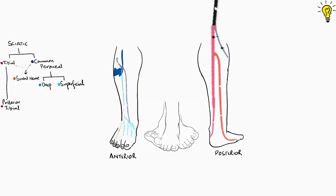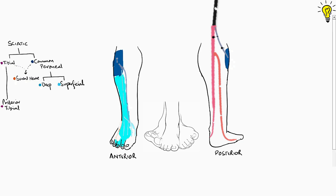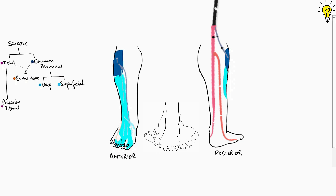The common peroneal supplies the lateral proximal aspect of the leg before it bifurcates into deep and superficial branches. The superficial peroneal supplies the remaining anterolateral area of the leg distally, marked in sky blue, and extends all the way down the ankle to the dorsum of the foot and to all the toes except the lateral-most toe, which is supplied by the sural nerve. The area between the first and second toe is supplied by the deep peroneal nerve, marked in a darker shade of blue.